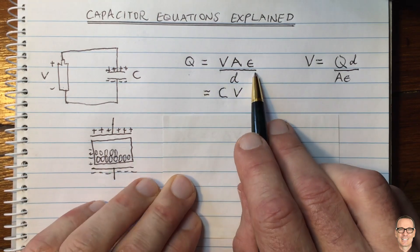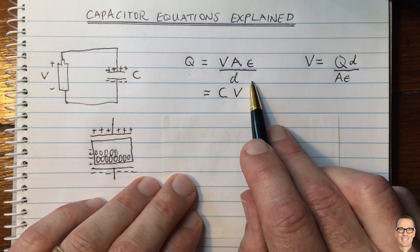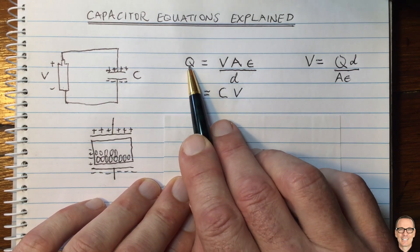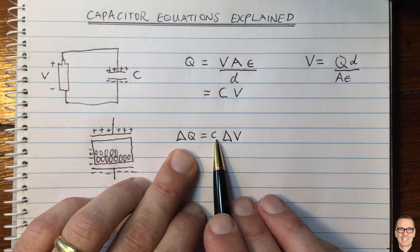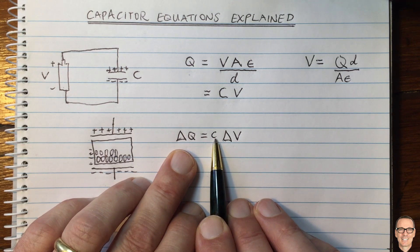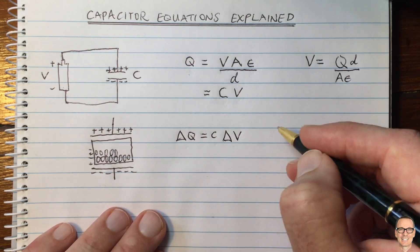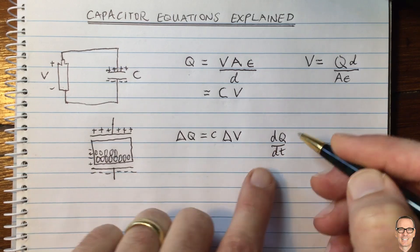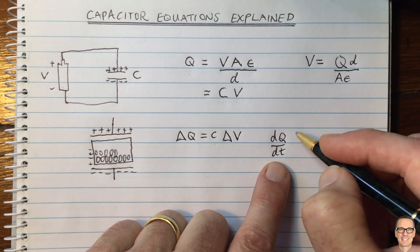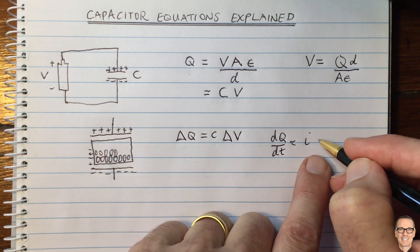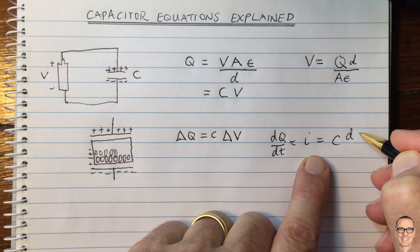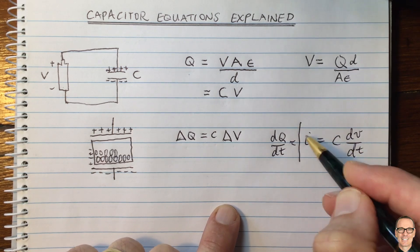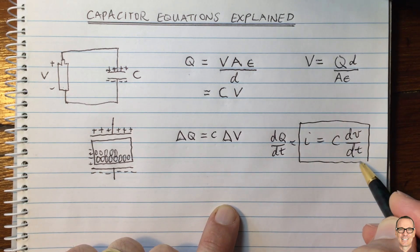So now we have the static equations. Let's think about the dynamic equations. Clearly we can see from this formula here that if we change the voltage, then we change the charge and the proportionality is the capacitance. If we do a small change in the charge and we write this in terms of calculus, then we get dq/dt, the change in charge with respect to time. That actually equals the current, and that is going to equal the change in the voltage with respect to time.